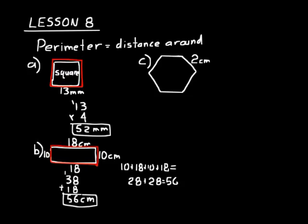Look at practice problem C. We're trying to find the perimeter of a hexagon. Each segment of that hexagon is the same length — they're all two centimeters long. Hexagons have six sides; you can count them and see there are six. So let's do a multiplication problem: six sides, all two centimeters — six times two is 12. We have to write our units to complete the solution: twelve centimeters is our answer.